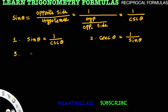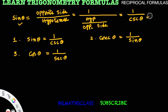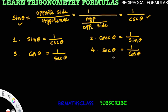Similarly, the third formula: cos theta. The reciprocal formula is cos theta equals 1 divided by secant theta. This can be proved easily in the same way we proved sin theta equals 1 by cosecant theta. And the fourth formula: if cos theta equals 1 by secant theta, then secant theta equals 1 divided by cos theta. Out of 6, we have now learned 4 formulas.